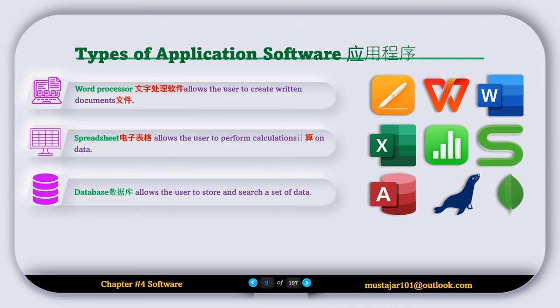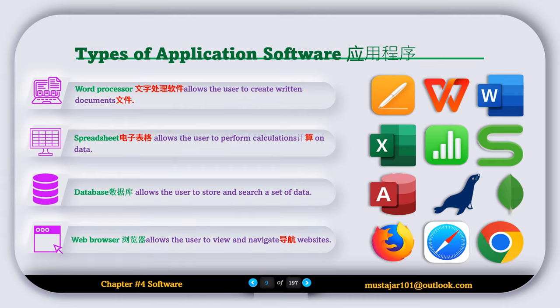Then we have database software, which allows users to store and search a set of data. Examples include Microsoft Access, SQL, and MongoDB. We also have web browsers, which allow users to view and navigate websites. Examples include Safari, Chrome, and Firefox.